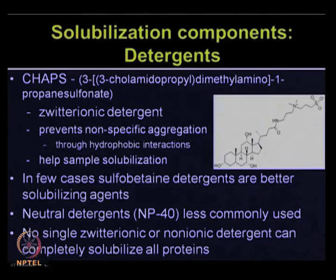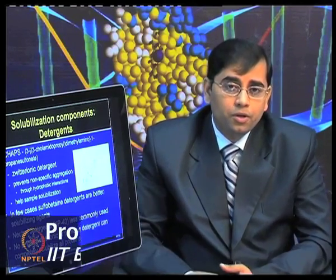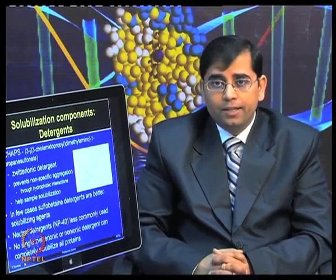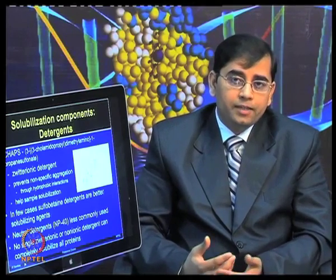In some cases, ASB14 or sulfo betaine detergents are better solubilizing agents. You also have the option of using neutral detergents such as NP40, although they are less commonly used. No single zwitterionic or non-ionic detergent can completely solubilize all proteins, so depending upon your sample type and if you know your sample is rich in specific proteins, you need to try different detergents.